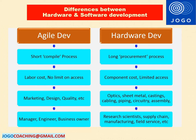The first difference is related to procurement lead time. Software teams have a relatively short compile process step within the design-build-test cycle, but hardware teams have a relatively long procurement step called lead time. Reducing the length of the procurement step is a key initiative in lean hardware product development. From the first day of hardware product development, lead time will create a major impact on the project.